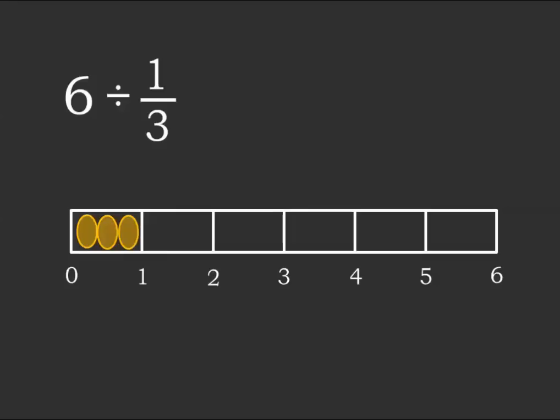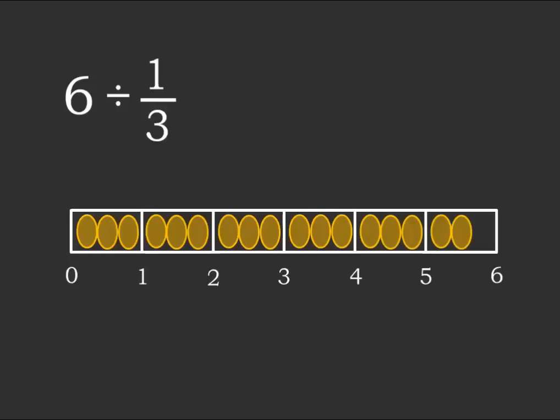Now imagine 6 divided by a third. How many third-sized pieces would fit into one piece? You can see that 3 would fit into 1. And so, into 6 pieces, you would have 18 altogether. I hope you're beginning to see a pattern. The bottom of the fraction — the 3 — tells you how many pieces are in one piece. You're cutting one piece of chocolate up into 3 third-sized pieces. That's why you would multiply the 6 by the 3, because you've got 3 little pieces in each piece and you've got 6 pieces altogether. You'd multiply the 2 things to get 18 third-sized pieces.